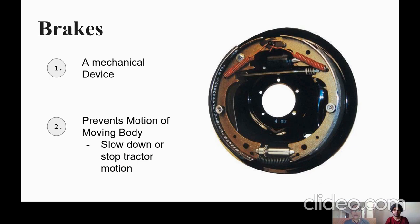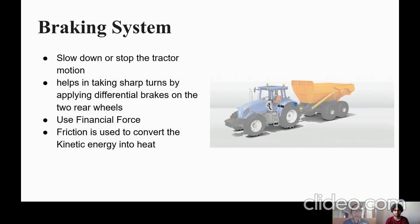A brake is a mechanical device that inhibits motion by absorbing energy from a moving system. It is mainly used to slow down or stop a moving vehicle and to prevent its motion. So let's discuss about the braking system of a tractor.